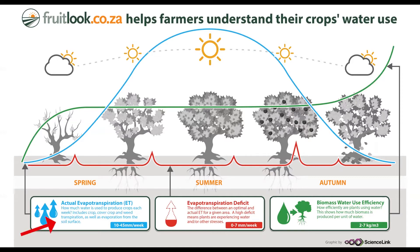Actual evapotranspiration tells you how much water is used to produce crops each week. It is the sum of the amount of water that is lost through crop, cover crop and/or weed transpiration, as well as the water evaporated from the soil surface. It thus represents the actual amount of water lost in the crop production process and is expressed in millimetres per week. Peak values are typically reached in mid-summer but greatly depend on plant physiology and management.